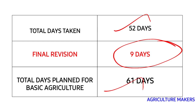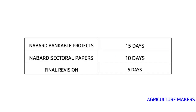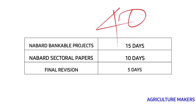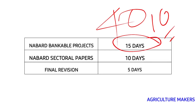Coming to NABARD bankable projects — there are nearly 40 projects. We can allocate 4 projects per day so that you complete all 40 in 10 days. But I have allocated 15 days so that you can read, make notes, and revise everything thoroughly.